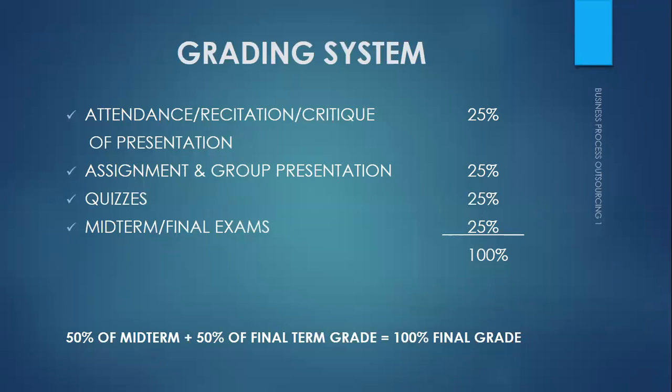With the grading system: attendance — which is more about timeliness in terms of submission of assignments and presentations — is 25%. Assignments and group presentations are 25%. Quizzes are 25%. Midterm and final exam are also 25% each, totaling 100%. Of course, 50% of the midterm and 50% of the final will be your final grade.